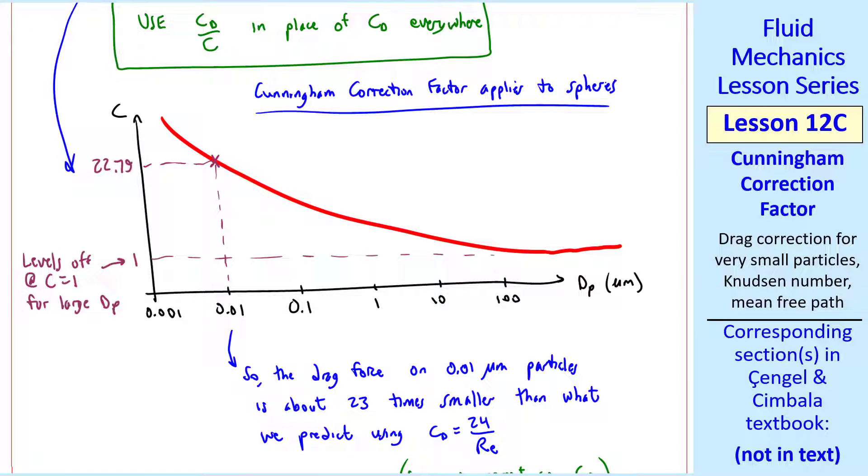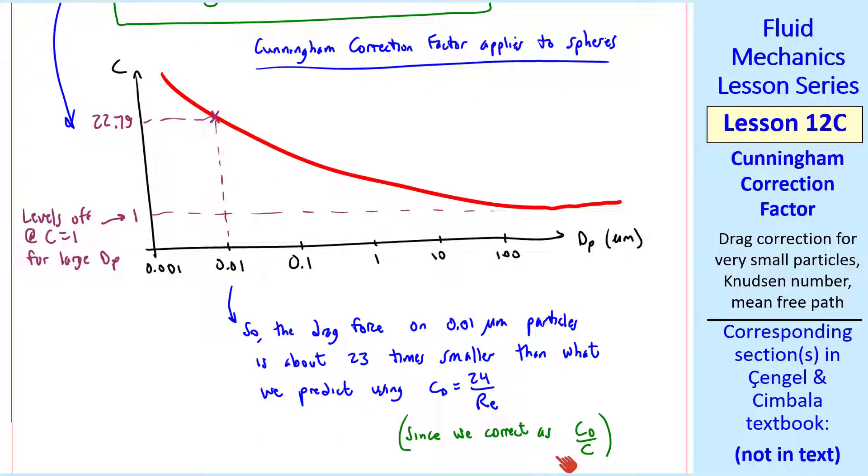The drag force on these 0.01 micron particles is about 23 times smaller than what we predict using Cd equal 24 over Reynolds number, since we correct Cd as Cd over C instead. And this factor appears in the denominator.